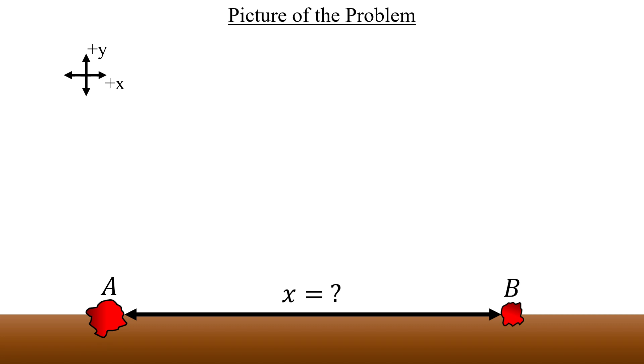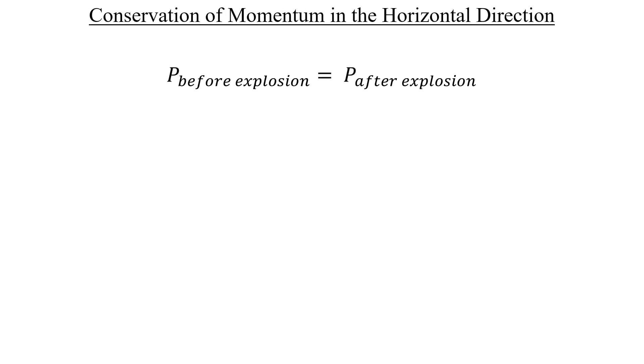Let's begin with the conservation of momentum in the horizontal direction. Right before the explosion, there is no horizontal movement. So we have zero on the left-hand side of this equation.